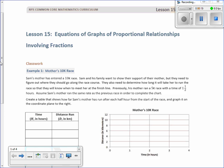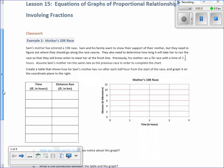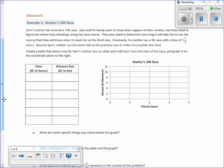Sam's mother has entered a 10K race. Sam and his family want to show their support for their mother, but they need to figure out where they should go along the race course. They also need to determine how long it will take her to run the race so that they will know when to meet her at the finish line. Previously, his mother ran a 5K race with a time of one and one-half hours.